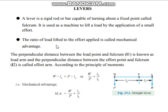Load lifted divided by the effort applied — this ratio is called mechanical advantage. Suppose I am lifting 50 kg weight with 25 kg, that means I have a 2:1 advantage, that means 2 times. If I am able to lift a load of 50 kg with 5 kg, then 50 divided by 5 is 10, so mechanical advantage is 10.